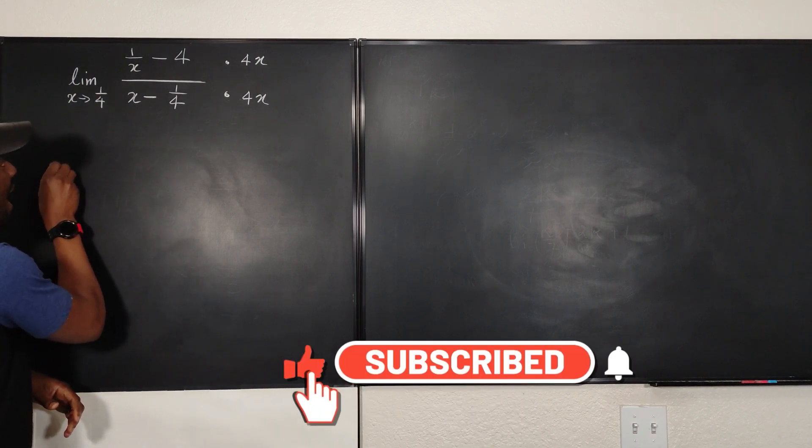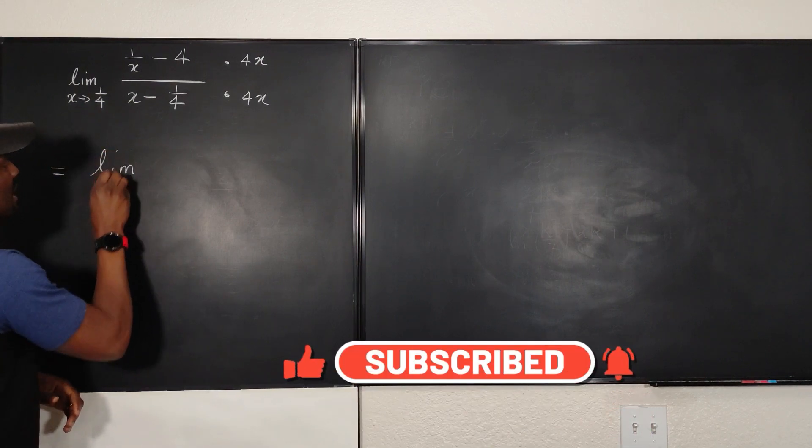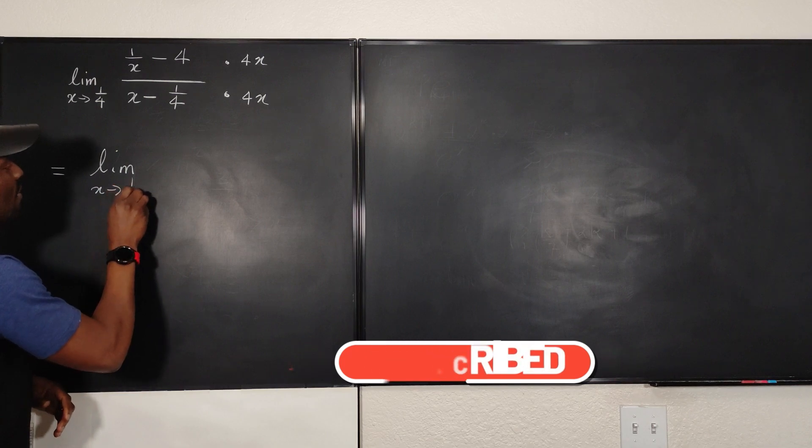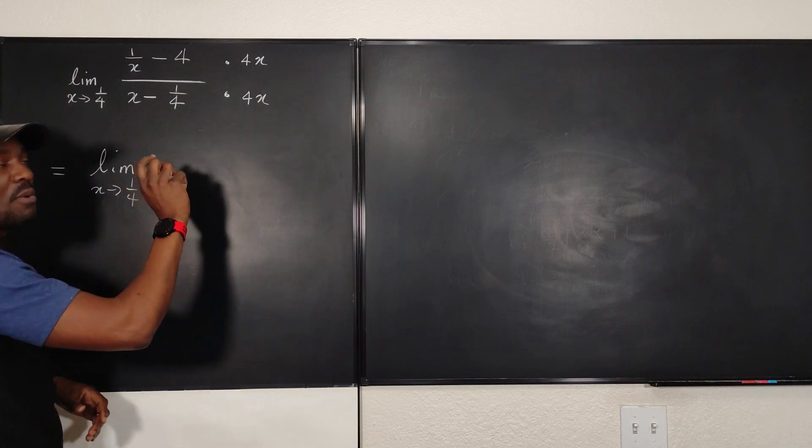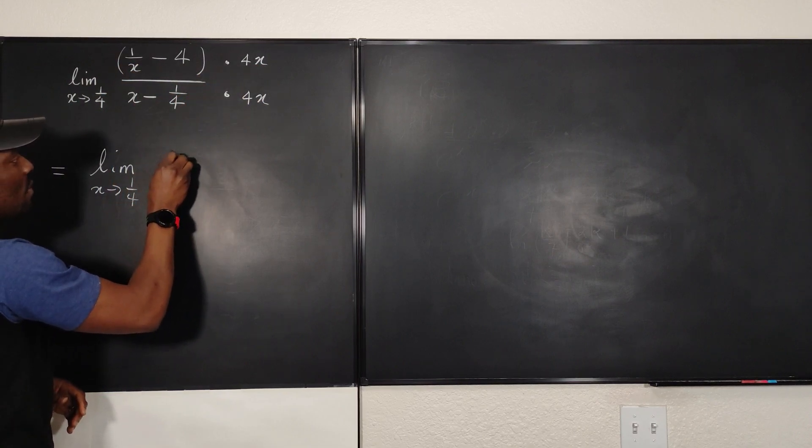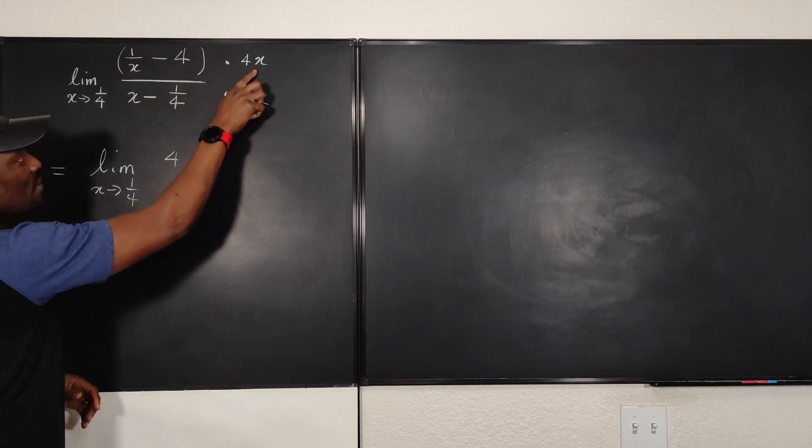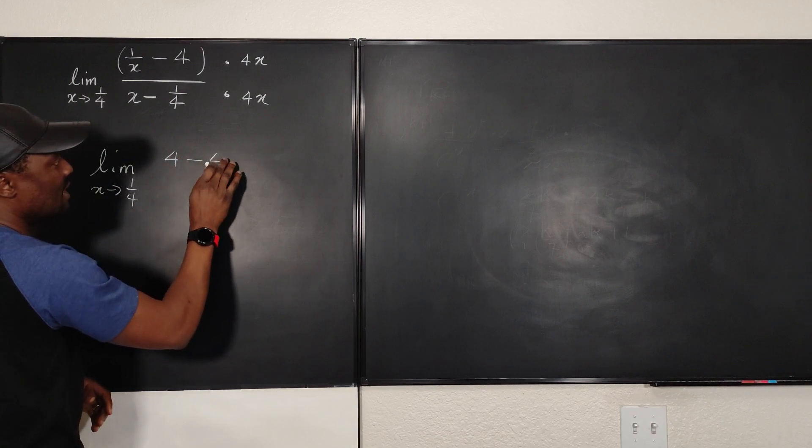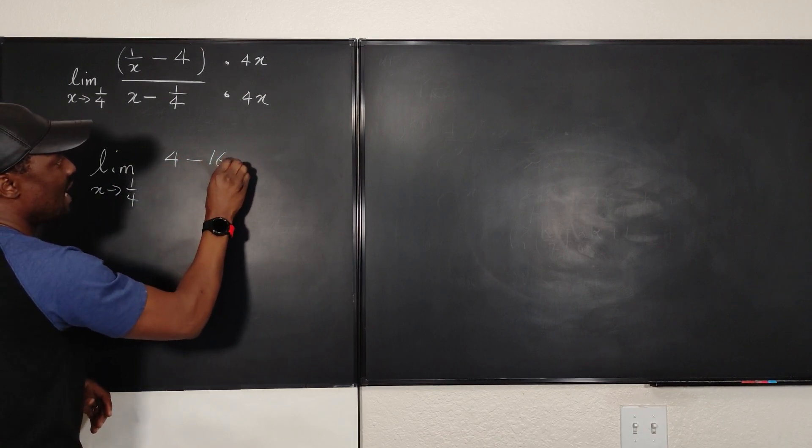So here, what I have is equal to the limit as X goes to 1/4 of... Now let's do this multiplication. If I multiply 1/X by 4X, I'm going to end up with 4. If I multiply 4 by 4X, I'm going to get 16X. So I have 16X.